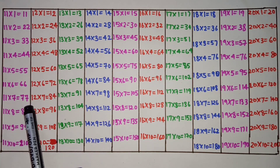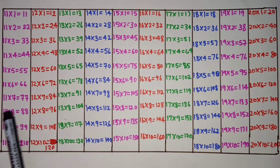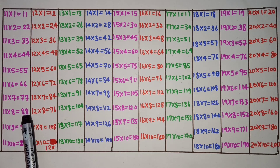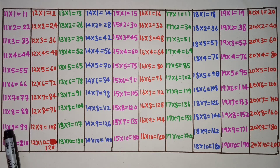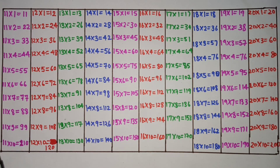11 7s are 77, 11 8s are 88, 11 9s are 99, 11 10s are 110.